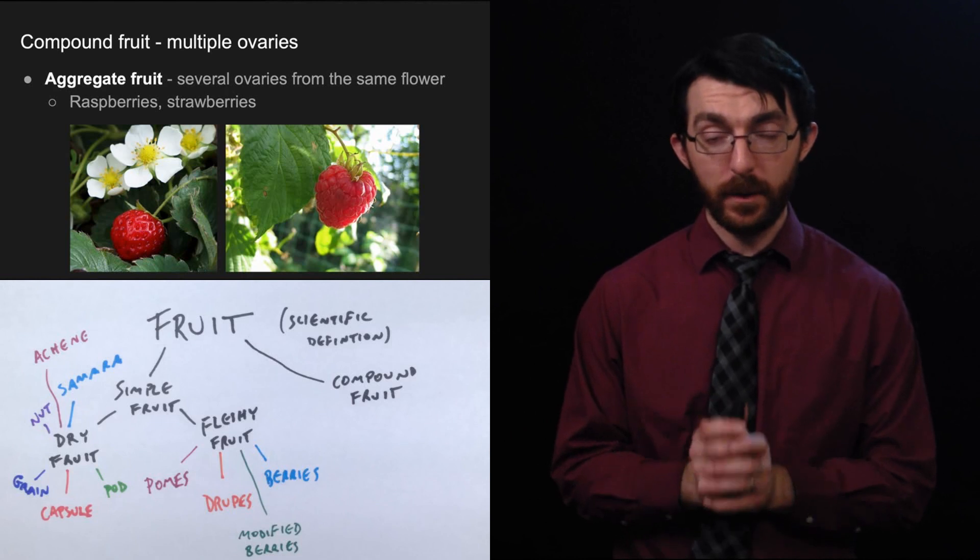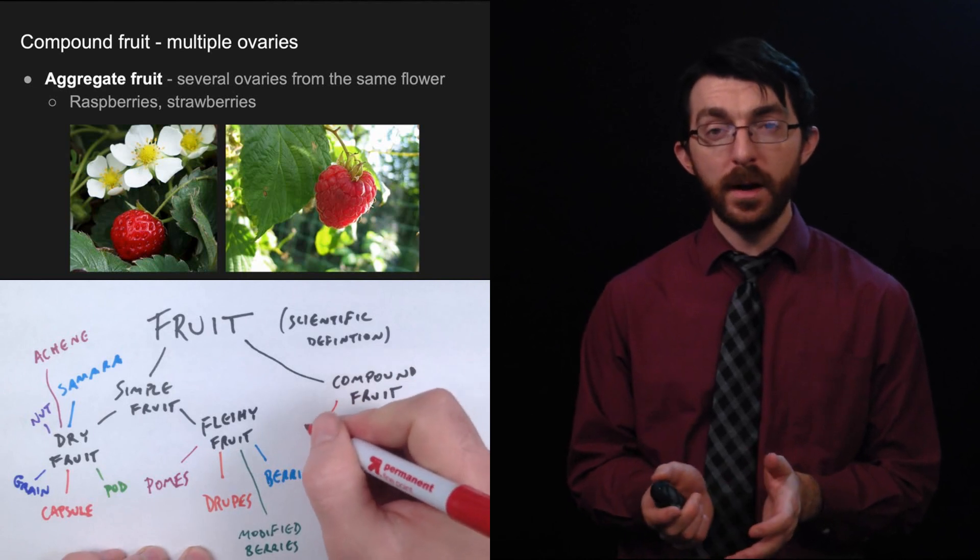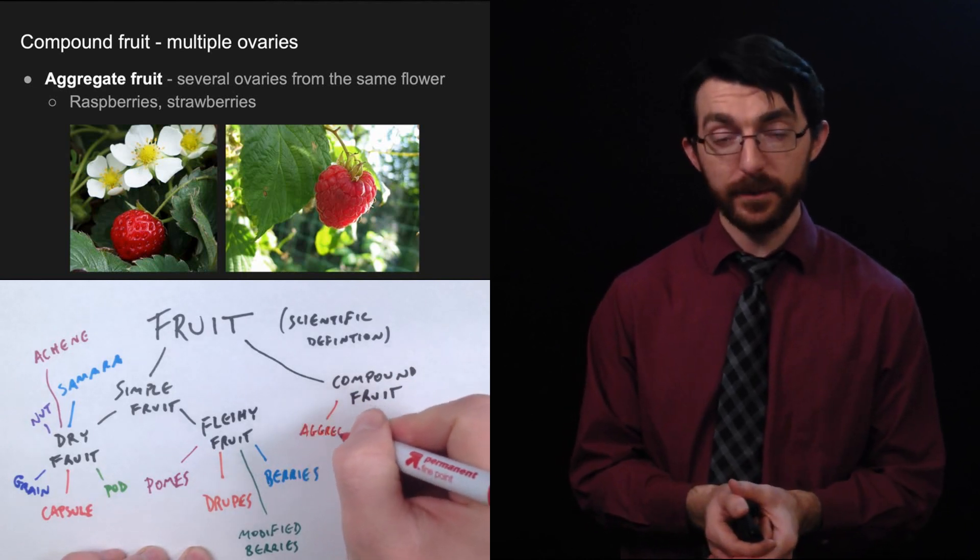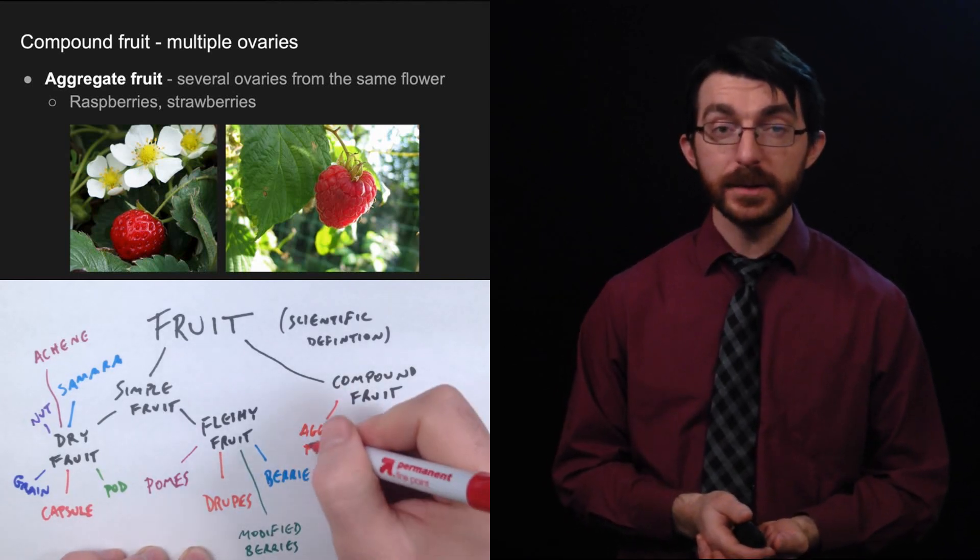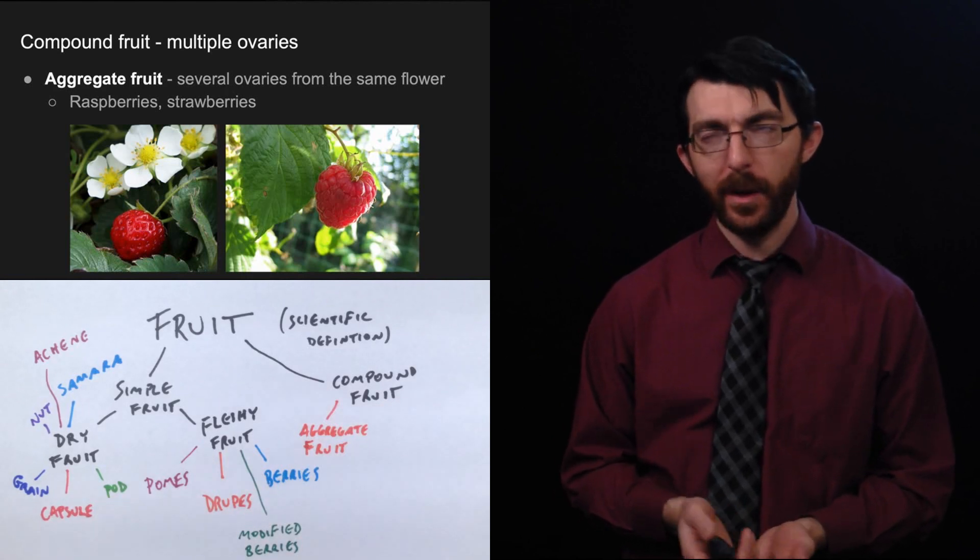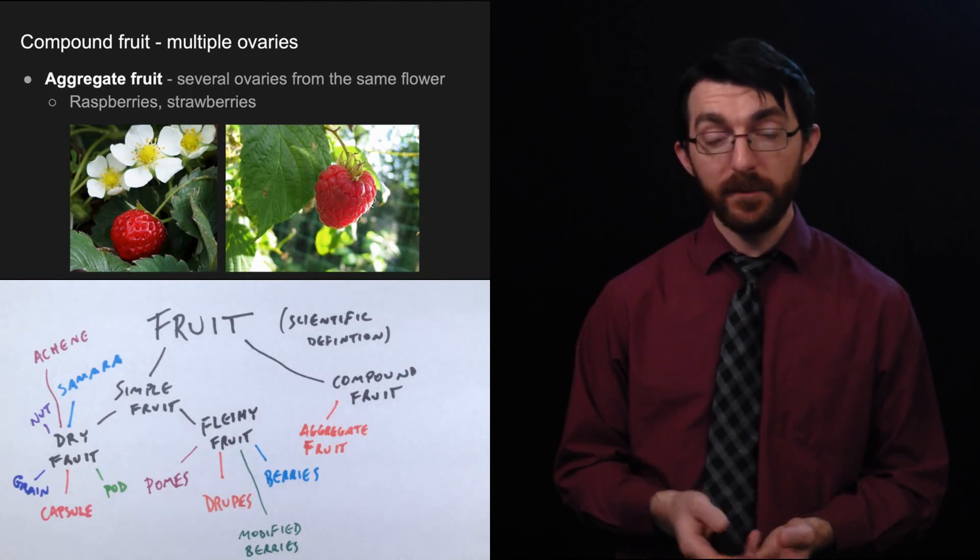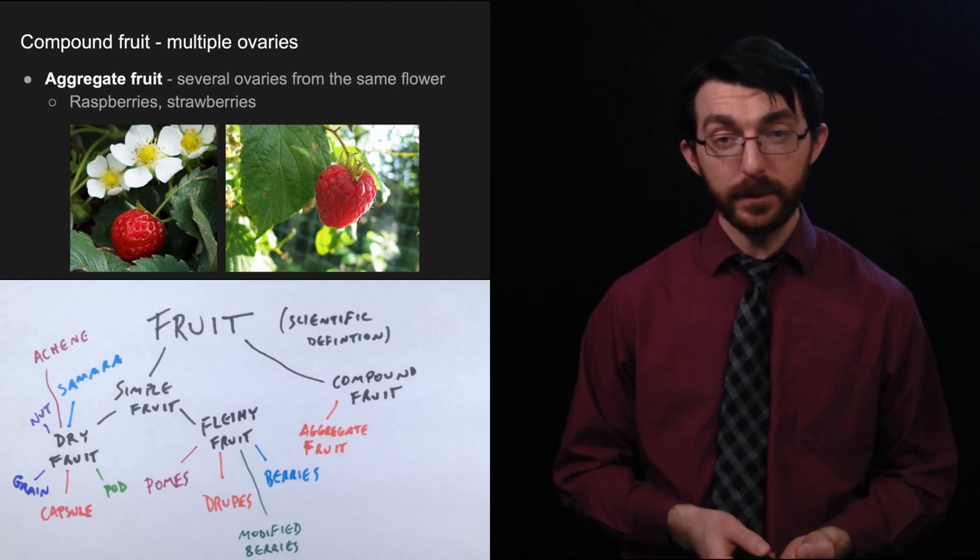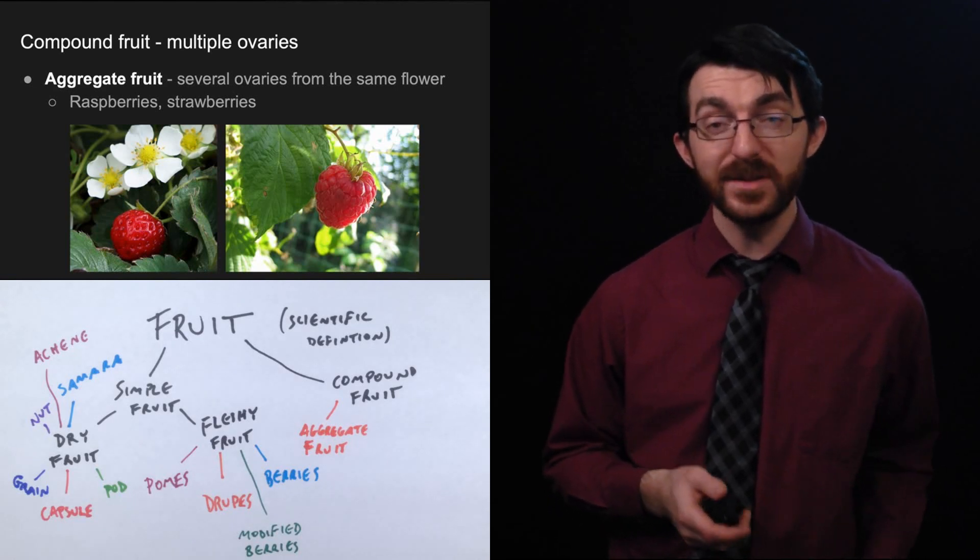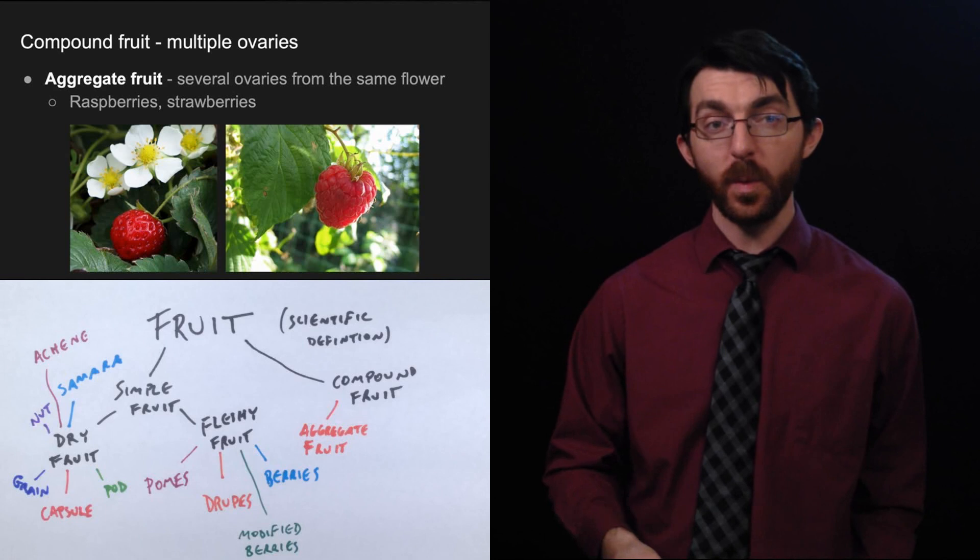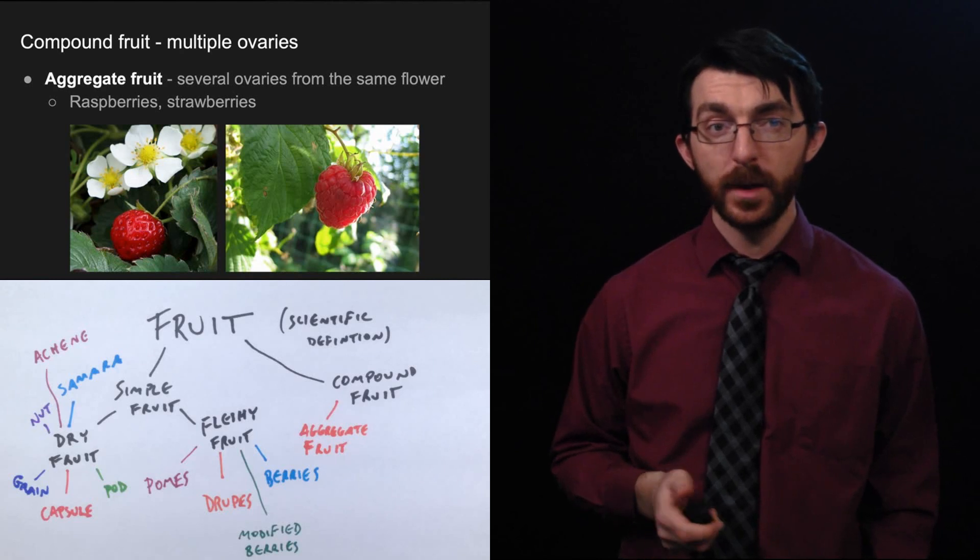We're moving on to compound fruit. These would be fruit that contain multiple ovaries. And one kind of compound fruit is called an aggregate fruit. And that's several ovaries from the same flower. And good examples are raspberries and strawberries. If you remember way back, way back a couple minutes ago when I was talking about berries, we had grapes and tomatoes and neither one had berry in their name. Finally, we have fruit with berry in their name and they're not even berries. These aggregate fruits are made of several ovaries from the same flower. That's why they've got that structure that they do like little pockets of seeds distributed around it.